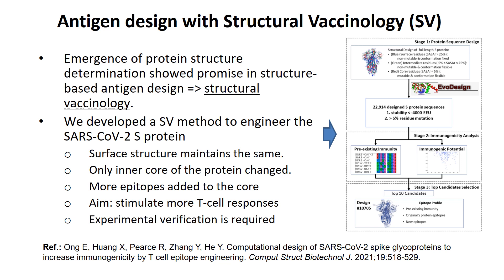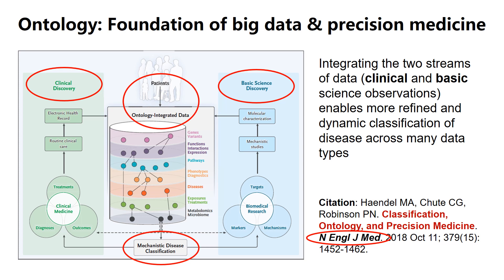Another area we've been working on is structural vaccinology. For the COVID-19 S protein study, we separated the structure into three parts: the surface part, the core part, and the intermediate part. You want to keep the surface structure about the same as the native one, because by doing so you can maintain the B cell epitopes unchanged. Then for the inner part, you can actually change the sequence to include more T cell epitopes, in order to stimulate a stronger T cell response. Of course, the results still require experimental verification.